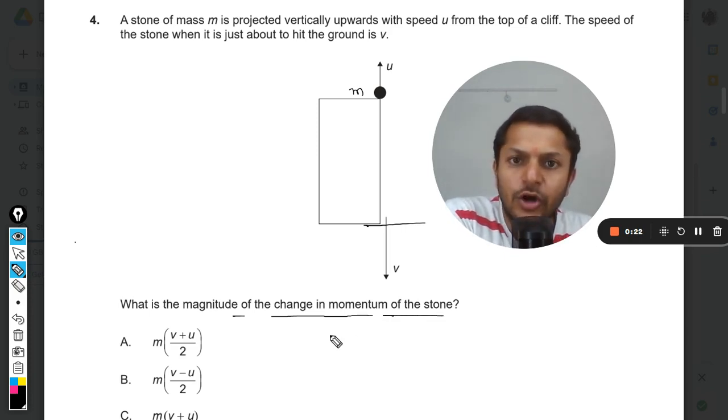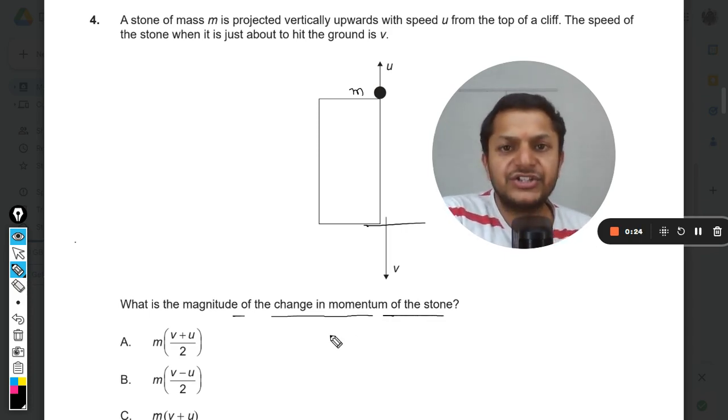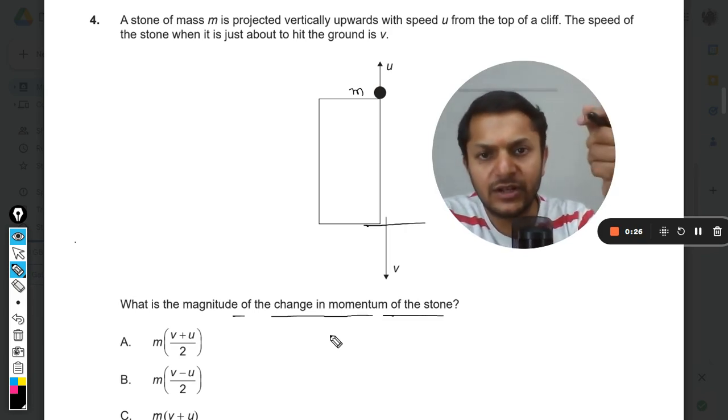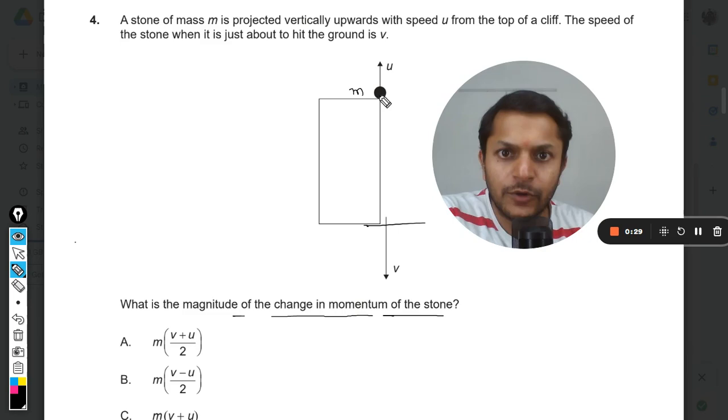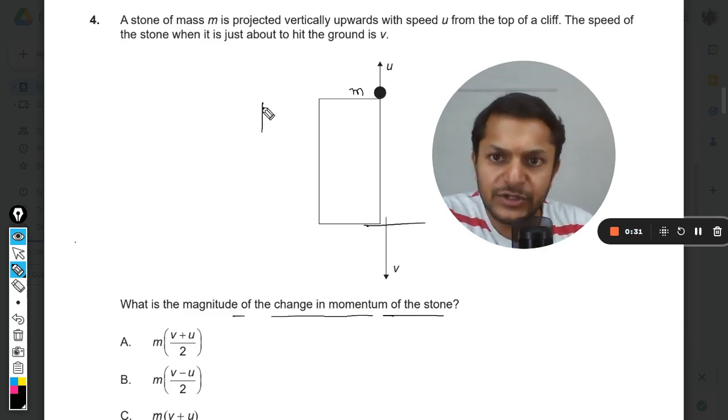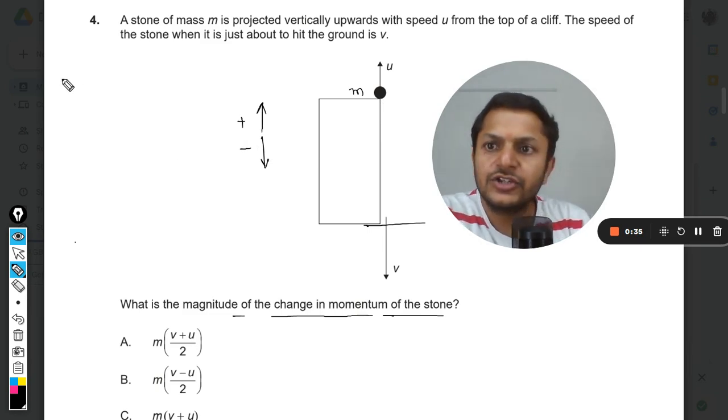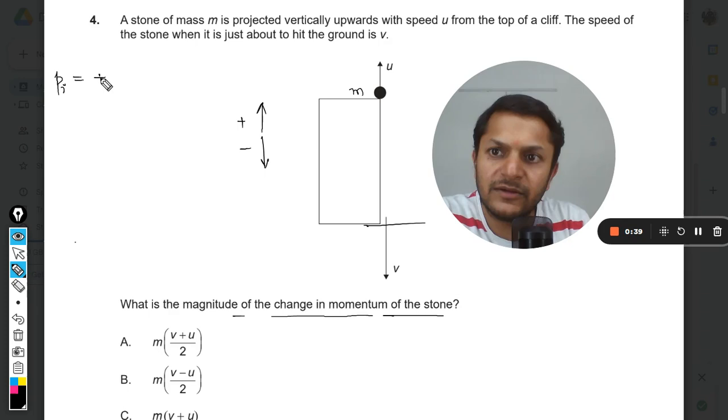So he's talking about the total change in momentum from the initial point to the final point. One direction has to be taken as positive, another will be taken as negative. So we are just going to write what is the initial momentum. The initial momentum will be positive m into u.